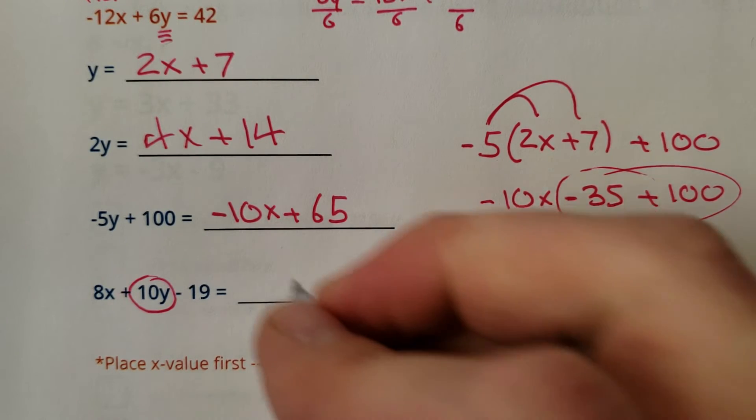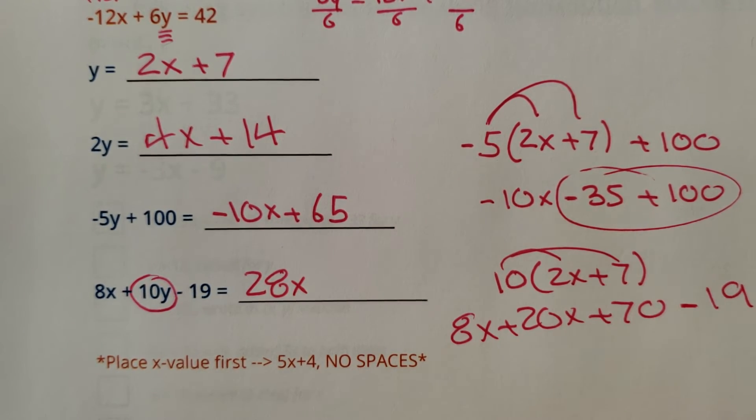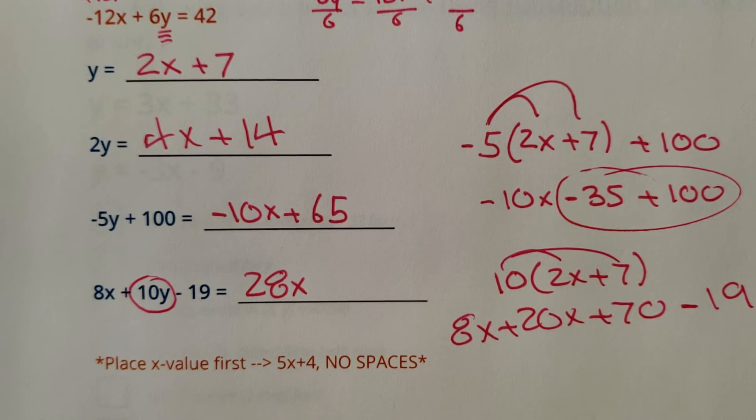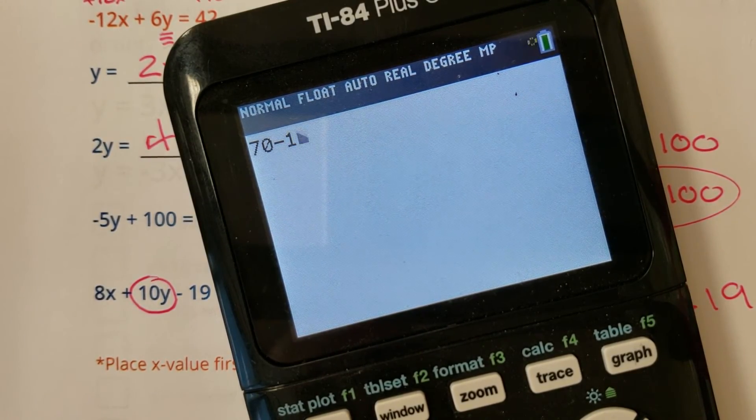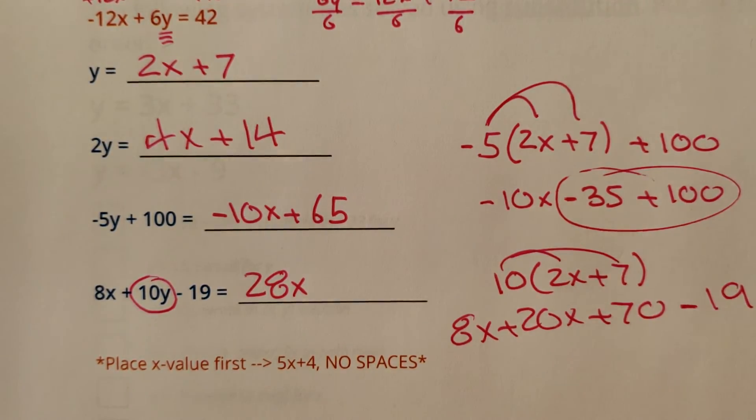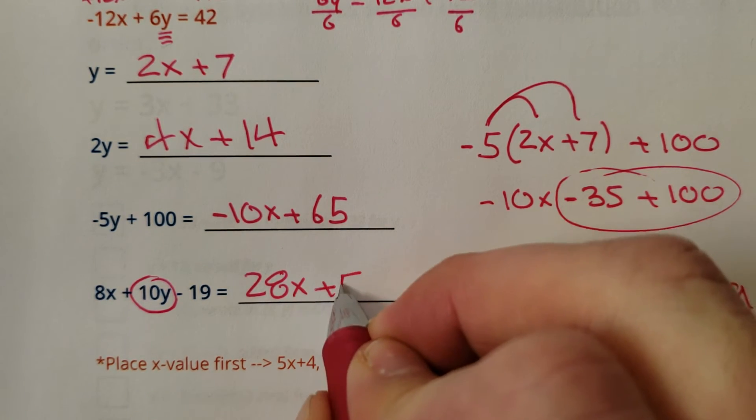So 8x and 20x would be 28x. 70 minus 19, I believe, is 51. Oh, type it out right, bro. Gotcha. Plus 51.